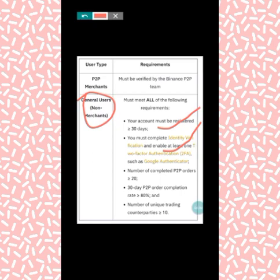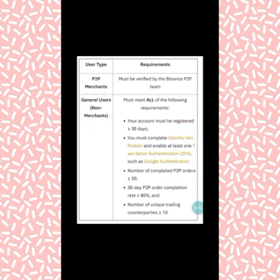The fourth requirement is that your 30-day P2P order completion rate must be greater than 80 percent. As you keep trading over a period of one month, your rating must be greater than 80 percent. This is not hard — once you buy and sell, your rating keeps increasing. The last requirement is that the number of unique trading counterparts must be greater than 10.